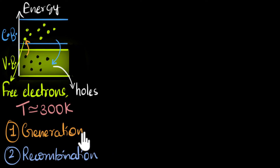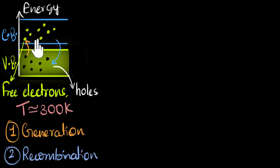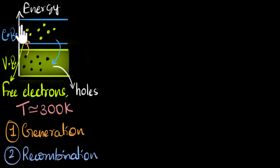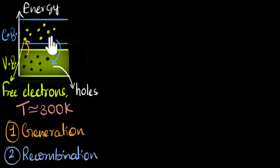Generation creates charge carriers and recombination destroys them — they are two opposite effects. One thing that confused me is thinking electrons are up here and holes are down there, so how can they come close to each other? But remember, this is an energy diagram, so it can be misleading. Electrons and holes are in the same physical space because they're in the same crystal, the same solid. So when they're moving randomly, they can definitely come very close to each other, and recombination can happen.